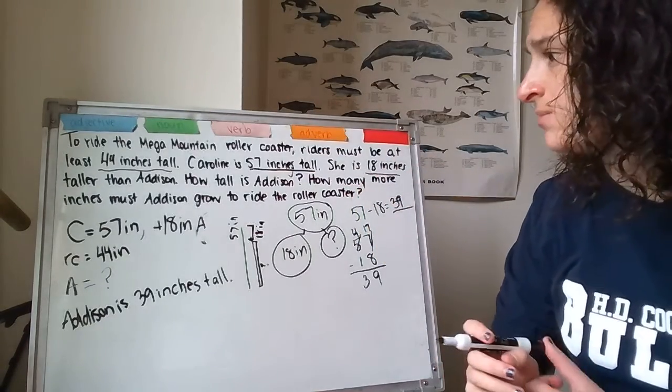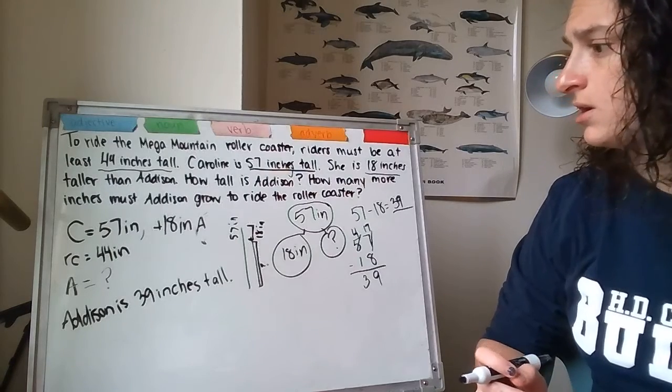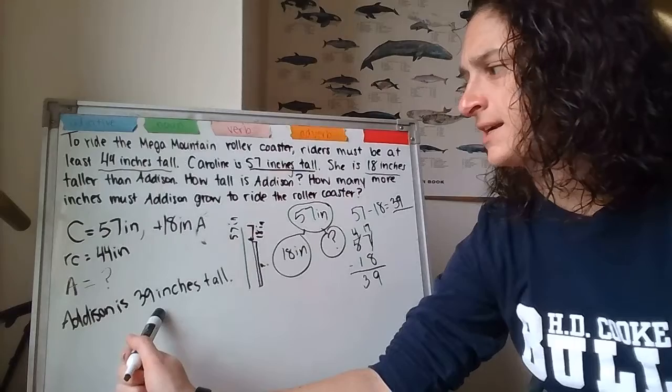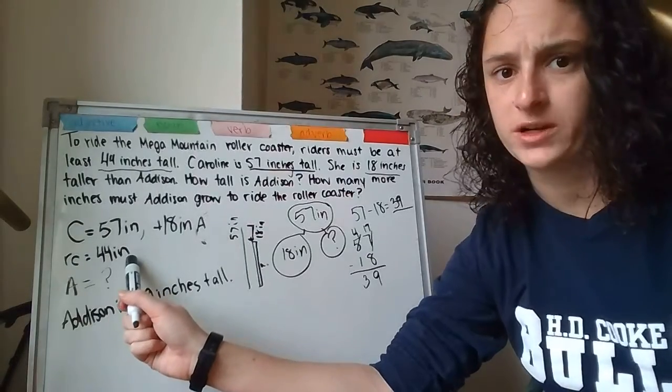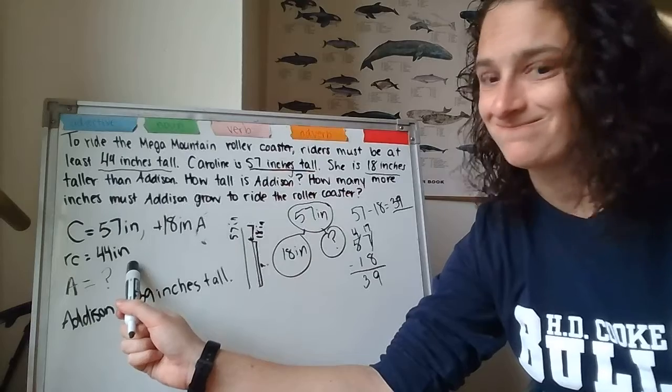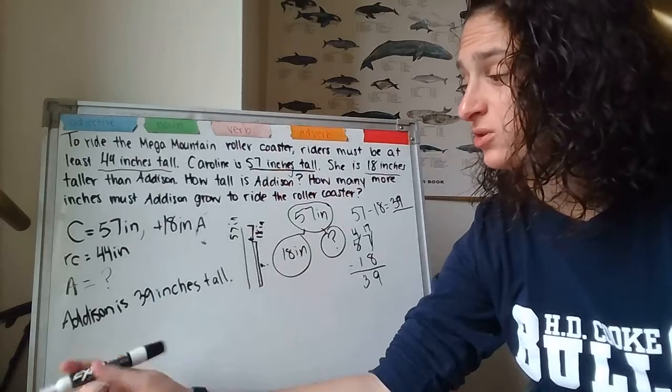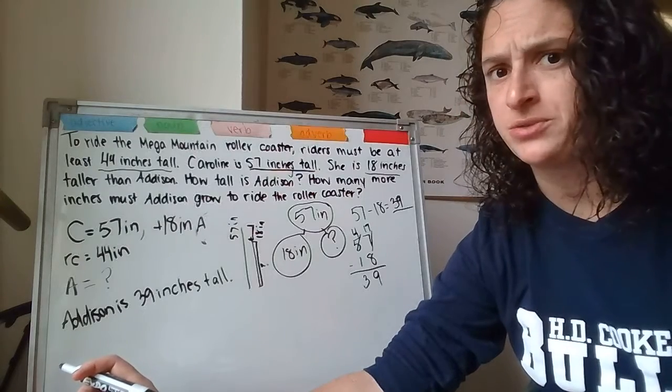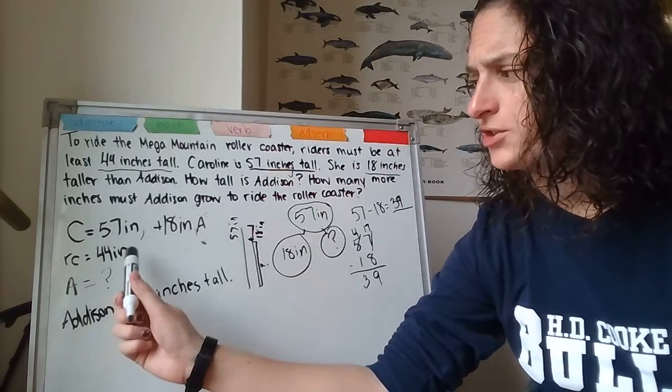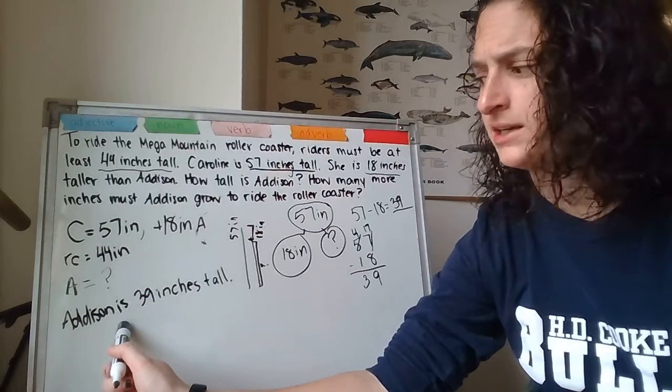Now, I need to say, how many more inches must Addison grow to ride the roller coaster? So, 39 inches is less than 44 inches. So, can Addison ride the roller coaster? She needs to be 44 inches. She is 39 inches.